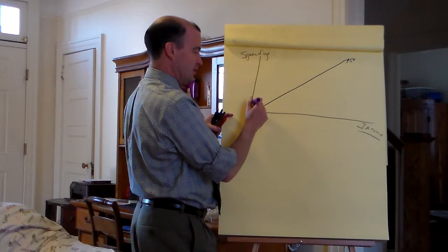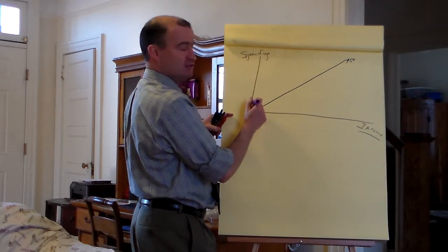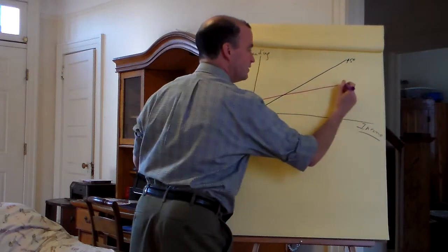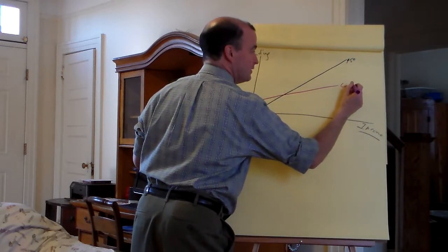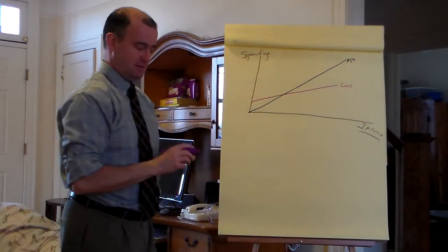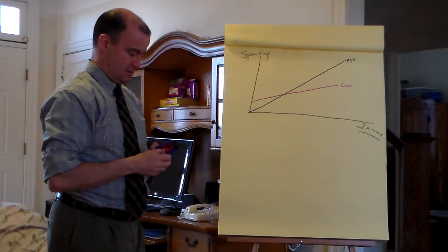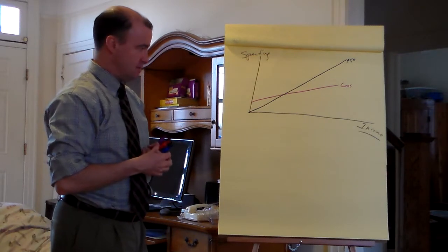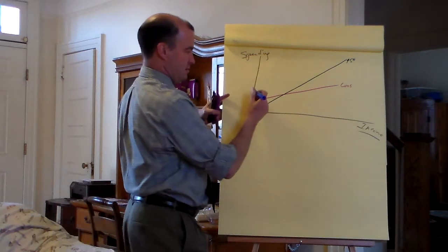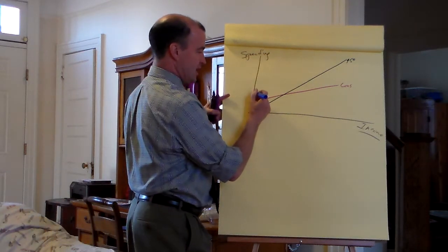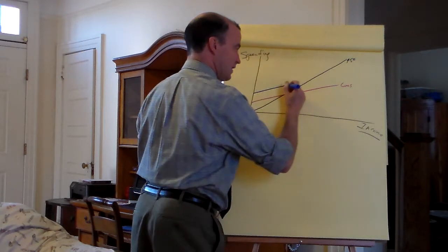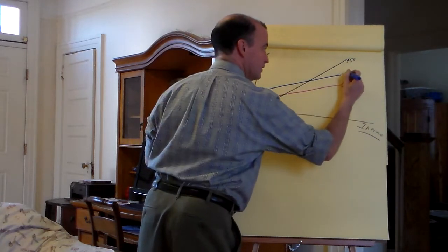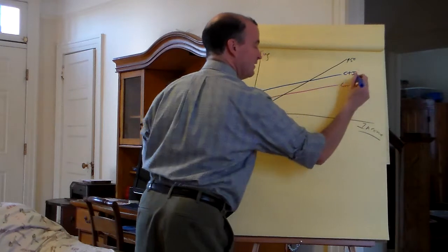The consumption line will be the lower line — it's going to have a slope of 0.8. Here comes C plus I; going to try to make it parallel. C plus I.